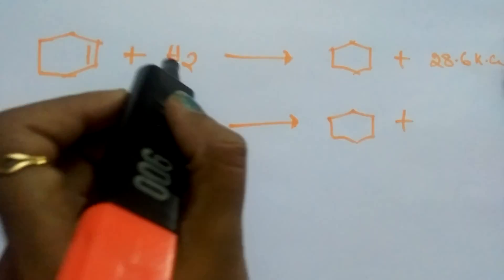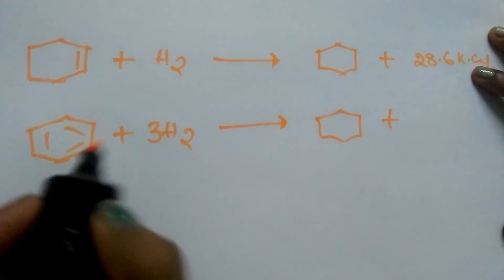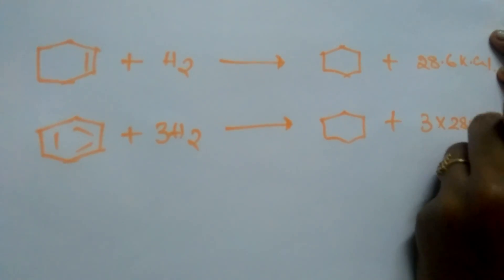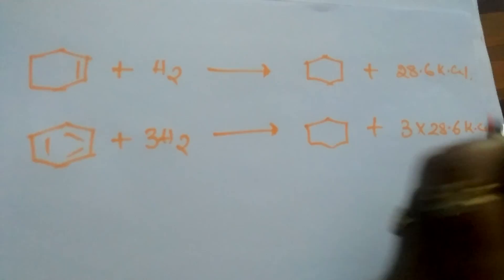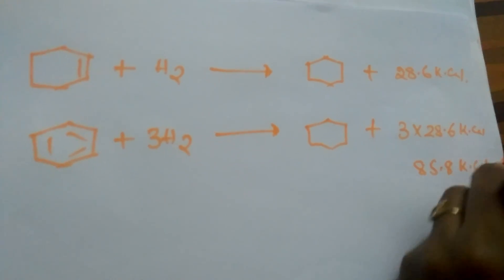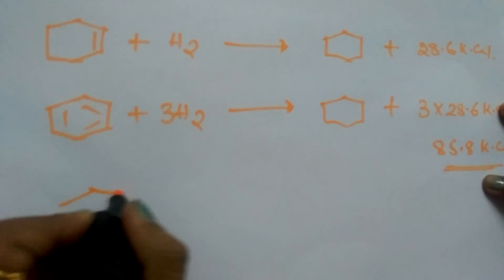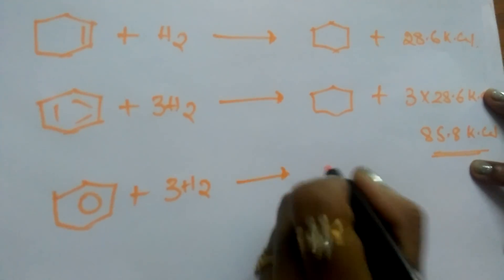For one bond, 28.6 kilocalories of heat of hydrogenation. For three bonds, 3 into 28.6 kilocalories of energy means 85.8 kilocalories of energy is the expected energy. But in real, if you add 3 moles of hydrogen to benzene, it releases 49.8 kilocalories of energy.